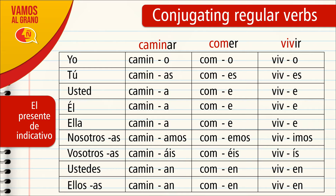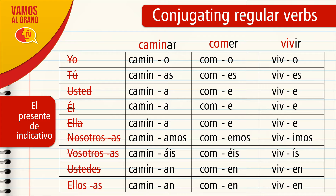Don't worry if at first glance you feel like it's a lot to memorize, because in reality this pattern can be reproduced with so many verbs — some of which we will look at at the end of the video. With practice it becomes very mechanical. Remember that Usted, Él, and Ella — the third person singular — receive the same conjugation, and Ustedes, Ellos, and Ellas — the third person plural — also share the same conjugation, as you can see here.